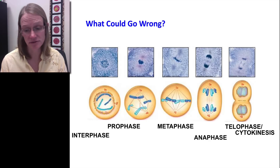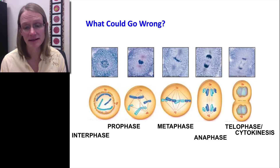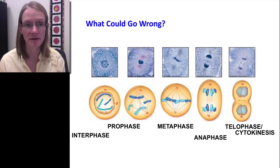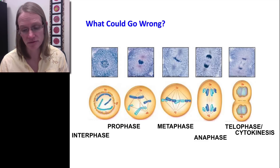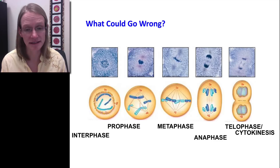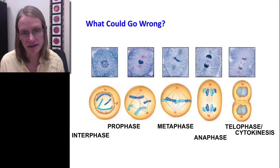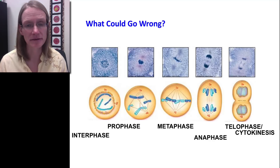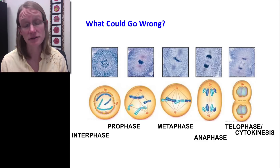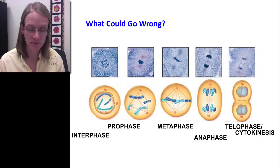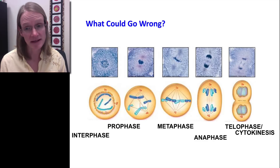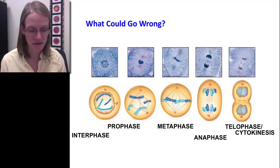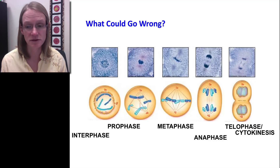In metaphase, the centromeres and all chromosomes must line up on the center plate — they could fail to do so, or the microtubules could fail to pull them into alignment. In anaphase, non-disjunction can occur where chromosomes don't get pulled to the correct side. The cell also needs to elongate, and an unattached microtubule could fail to lengthen and push the chromosomes to the appropriate side.